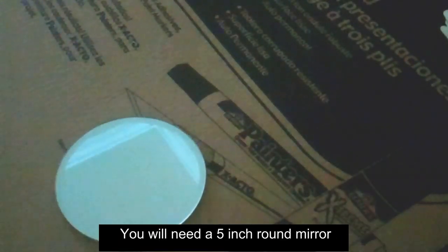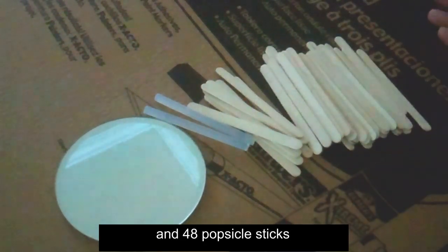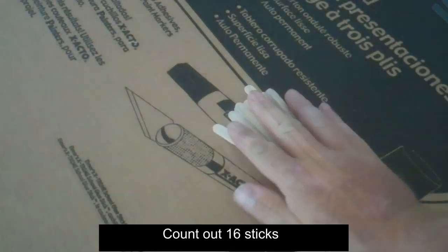What you will need is a round five inch mirror, one or two glue sticks or some super glue, and 48 popsicle sticks.